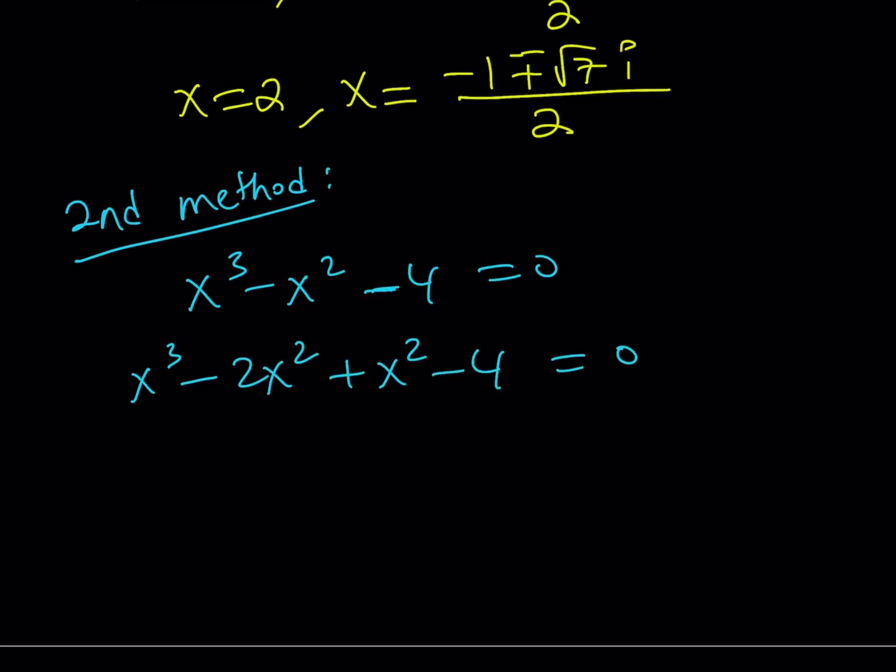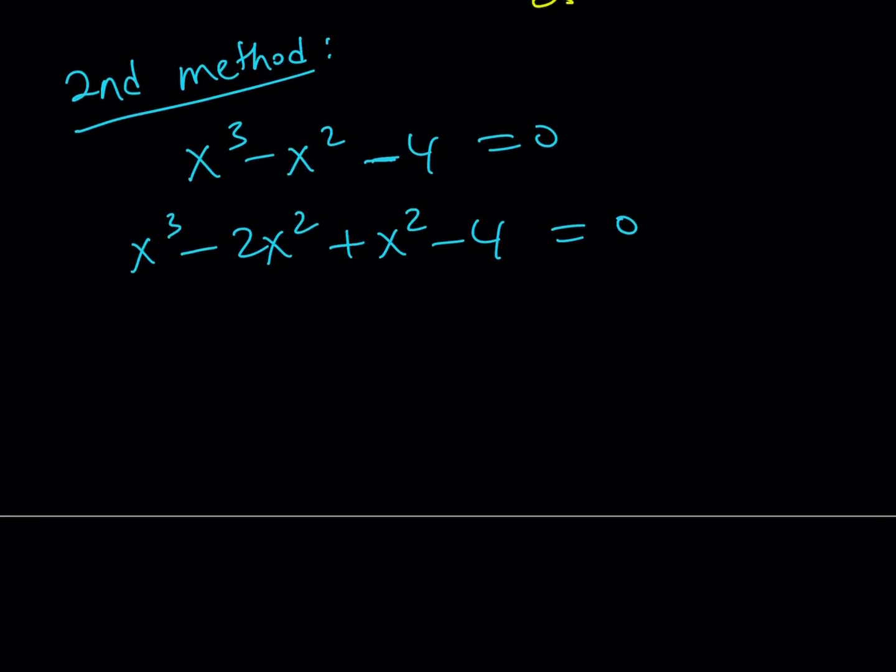The good thing about writing it this way is we can factor it by grouping just like before, but it's slightly different. So I can now take out x squared times x minus 2. And this is, again, difference of two squares. So I can kind of write it as x plus 2x minus 2.